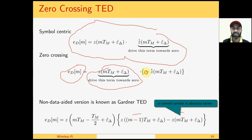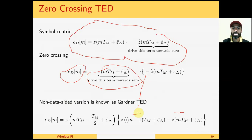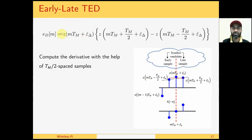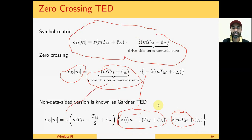We can see a negative sign here: we are subtracting a future sample from a previous sample, as opposed to early-late TED where we subtracted the past sample from the future sample. One difference here is that in early-late TED we had the matched filter output and the two neighboring samples, whereas here we have the middle sample approaching zero and then two symbols Z(M-1,TM) and Z(M,TM). That is why the data-aided version of Gardner TED — called the zero crossing TED — is given by the matched filter output Z(M, TM/2) multiplied by A(M-1) minus A(M), i.e., the previous symbol minus the current symbol.